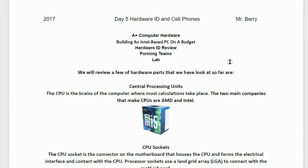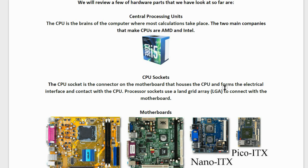Let's start with a review of key hardware parts covered so far. First, central processing units: the CPU is the brains of the computer where most calculations take place. The two main companies that make CPUs are AMD and Intel. The CPU socket is the connector on the motherboard that houses the CPU and forms the electrical interface and contact with it.